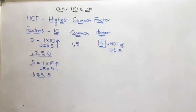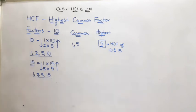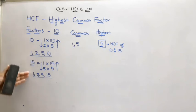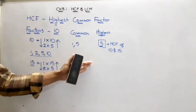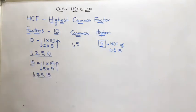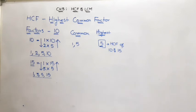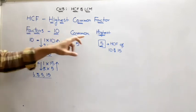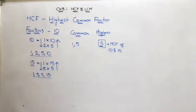This is the method which we have been following so far, but from 5th standard we won't follow this method. There exists a variety of methods like prime factorization, short division, and similar. Before understanding those, I want to just recap what exactly the highest common factor means.